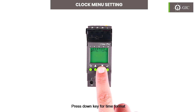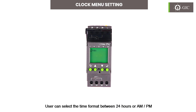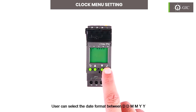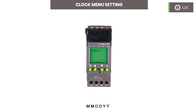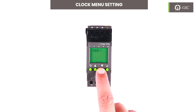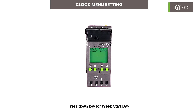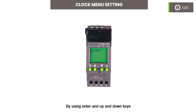Press the down key for 'Time Format.' The user can select the time format between 24 hours or AM-PM. Select the desired setting and press enter to confirm. Press the down key for 'Date Format.' The user can select the date format between DDMMYY, MMDDYY, or YYMMDD. Select the desired setting and press enter to confirm. Press the down key for 'Week Start Day.' The user can select a particular day from the week as the start day using enter and up and down keys. Press enter to confirm.